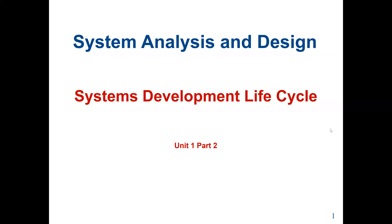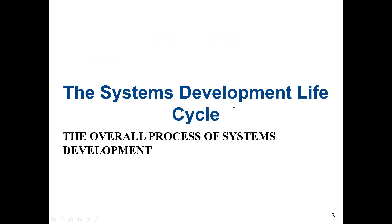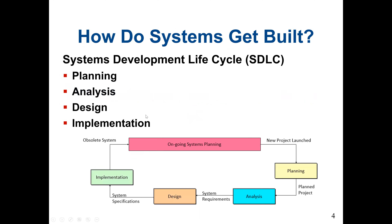This lecture covers the system development life cycle. Our main objective is to explain the basic system development life cycle and its phases. The system development life cycle consists of four different phases: the first phase is planning, followed by analysis, design, and implementation.